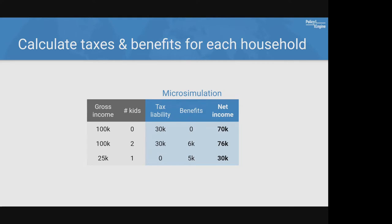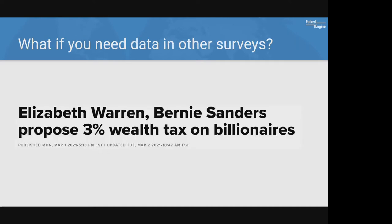At a high level, economic policy analysis involves looking at economic survey datasets that might have variables like income, family structure, and geography. From there, you use microsimulation models to calculate things like taxes each household owes and benefits they're entitled to, getting you to net income. You can then calculate this under alternative policy scenarios. This gets complicated when you look at policies not easily modeled with the underlying data — for example, a wealth tax.